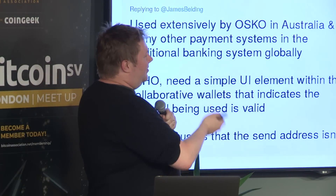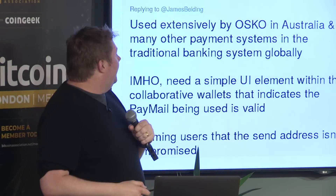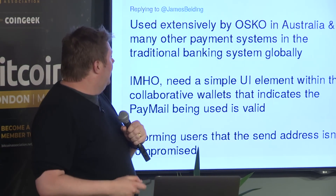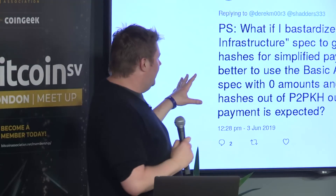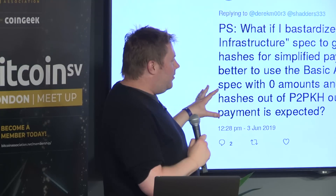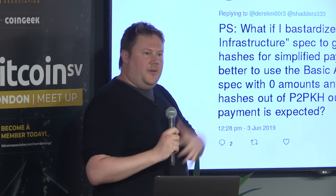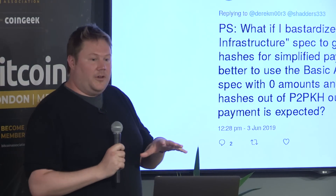It's really good to see someone thinking about visual security indication for Paymail — prior art for secure indication. But I think the solution is quite strict: don't do it without DNSSEC and HTTPS. I had a chat with Derek about this afternoon's next question: what if you bastardize the BSV alias public key infrastructure spec to generate public key hashes for simplified payments? Or is it better to use a basic address resolution spec with zero amounts and pass public key hashes out of the output scripts?